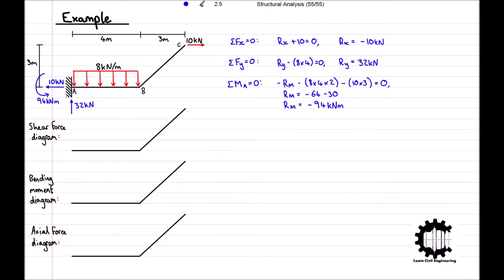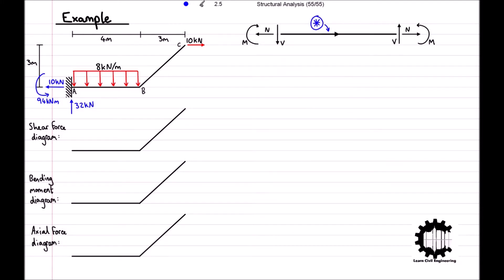Having calculated the support reactions, we will insert our diagram for the positive sensors for internal forces, which we will call our starred diagram for reference throughout the question. Let's start by analyzing the left side of the structure at point A. At point A the first force is the vertical reaction force of 32 kilonewtons acting upwards. Referencing our star diagram, we can see that at the left end of the bar positive shear forces act downwards, and so the reaction force of 32 kilonewtons causes a shear force of negative 32 kilonewtons.